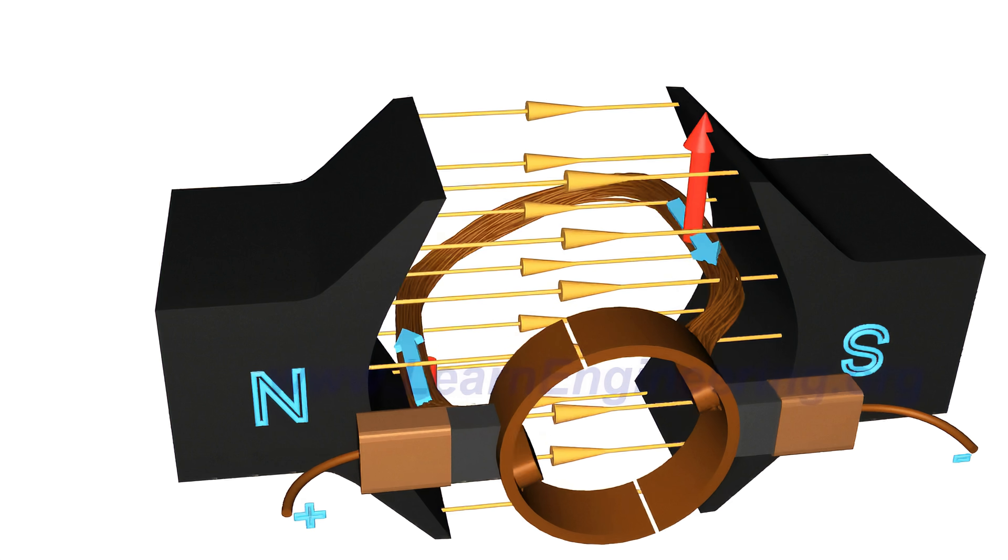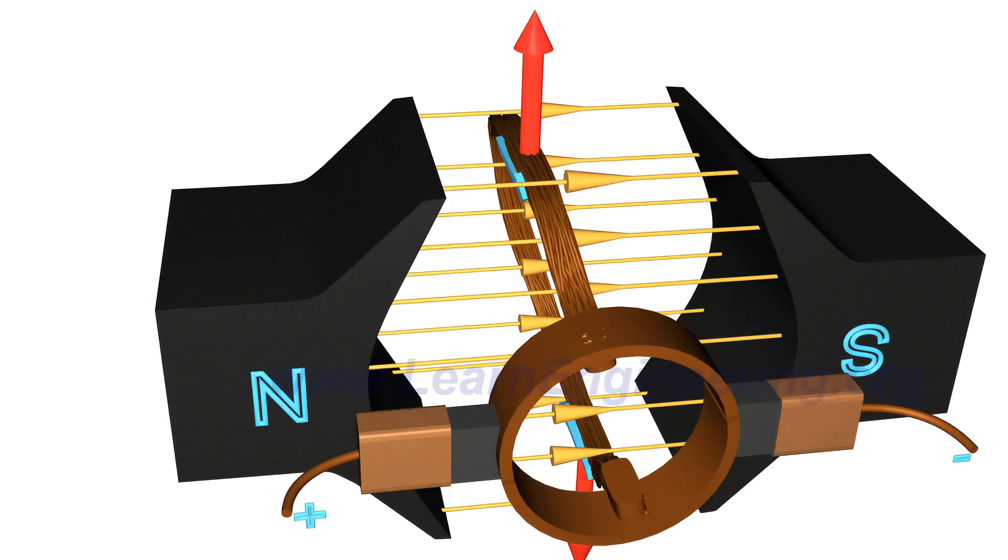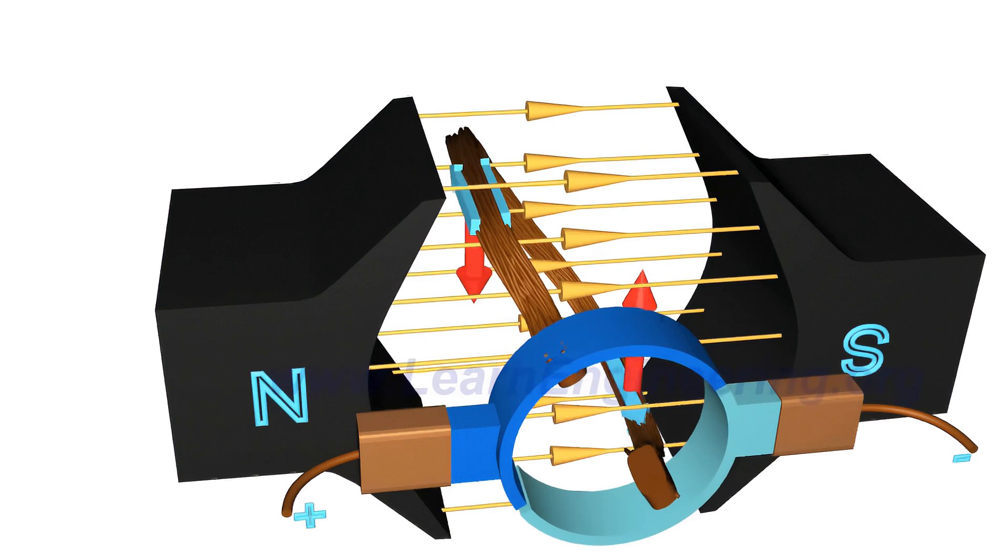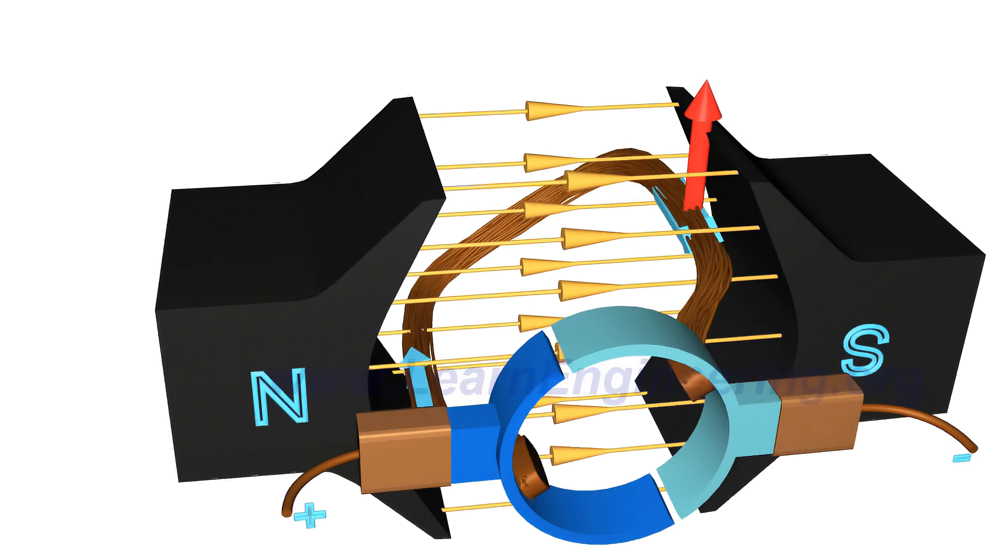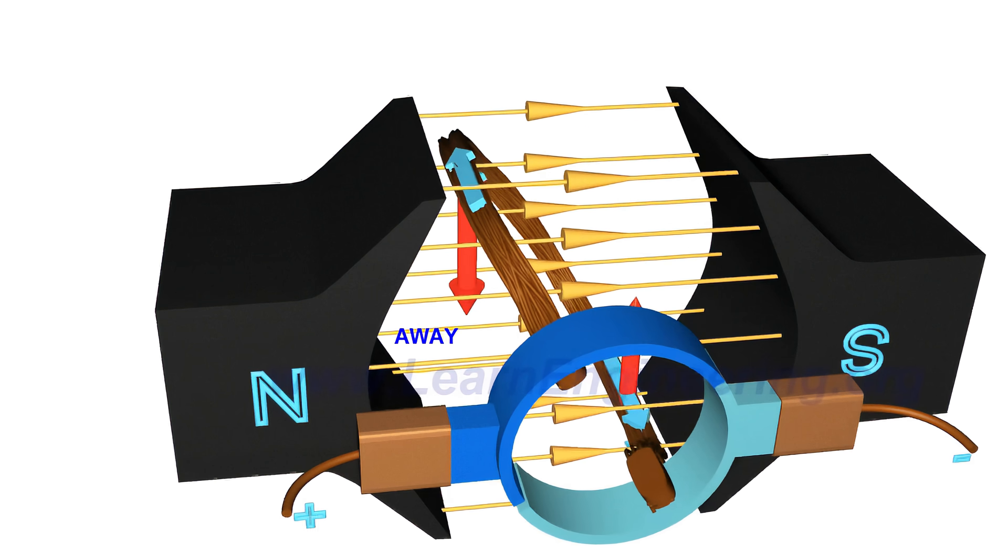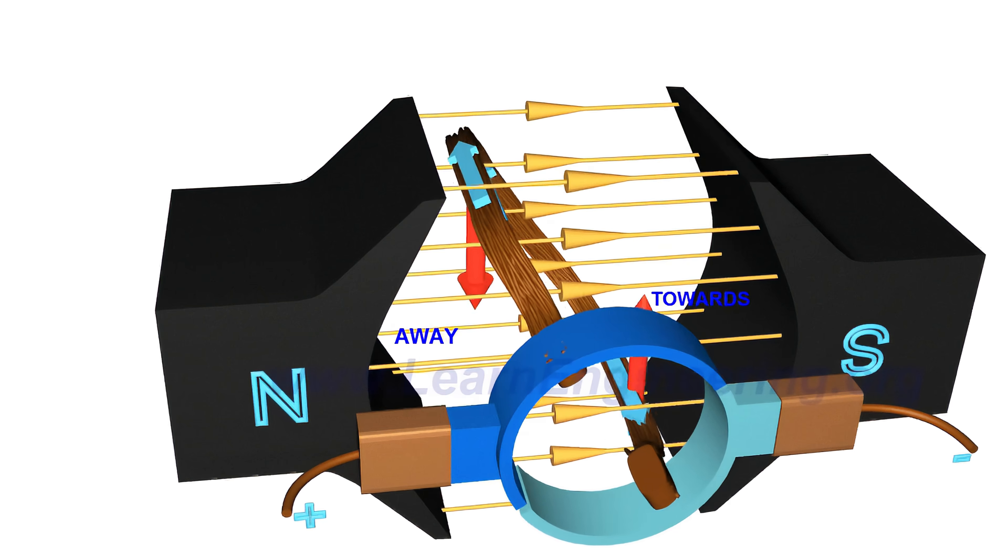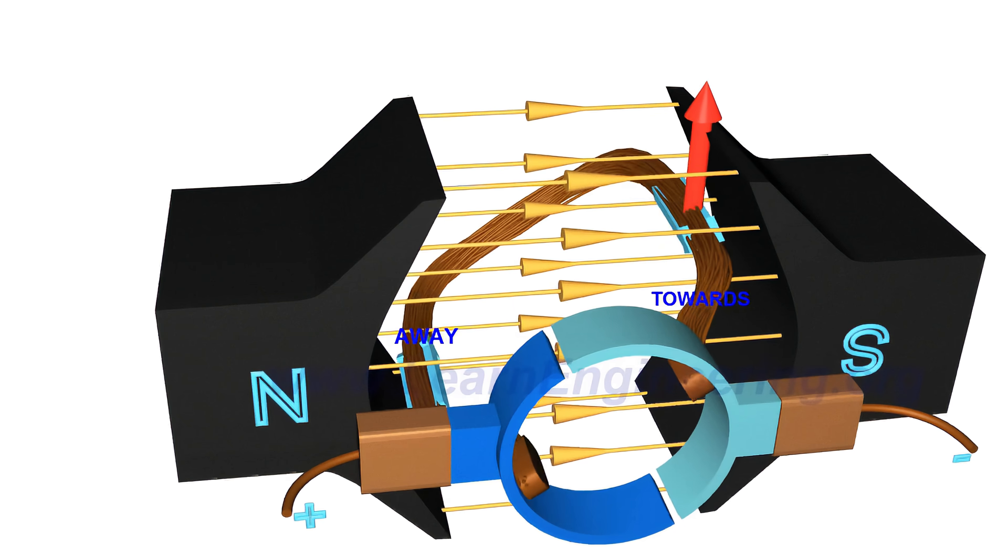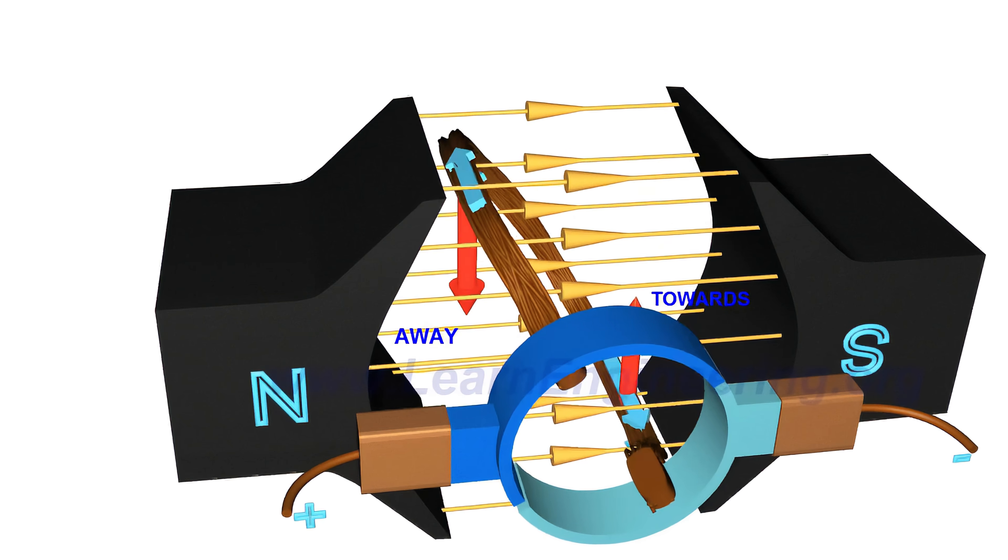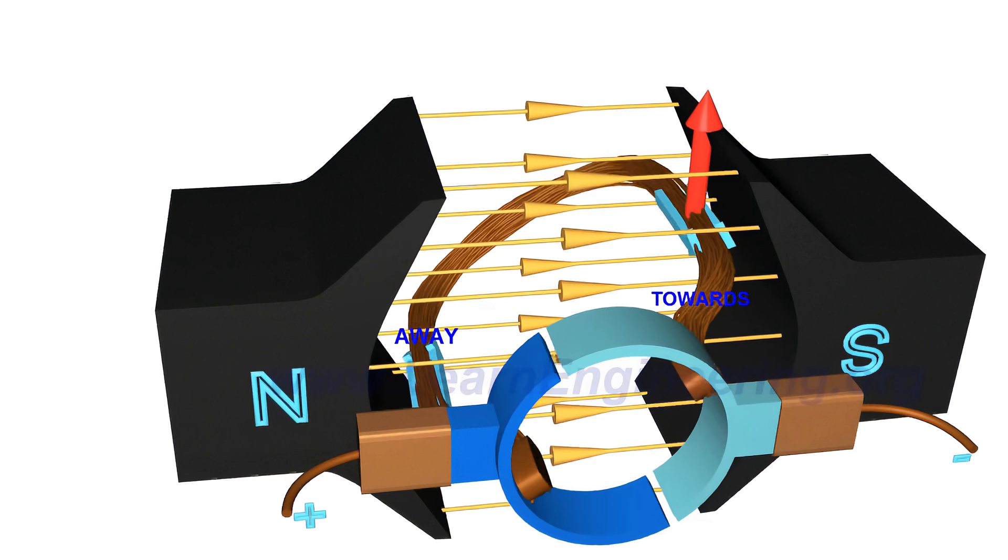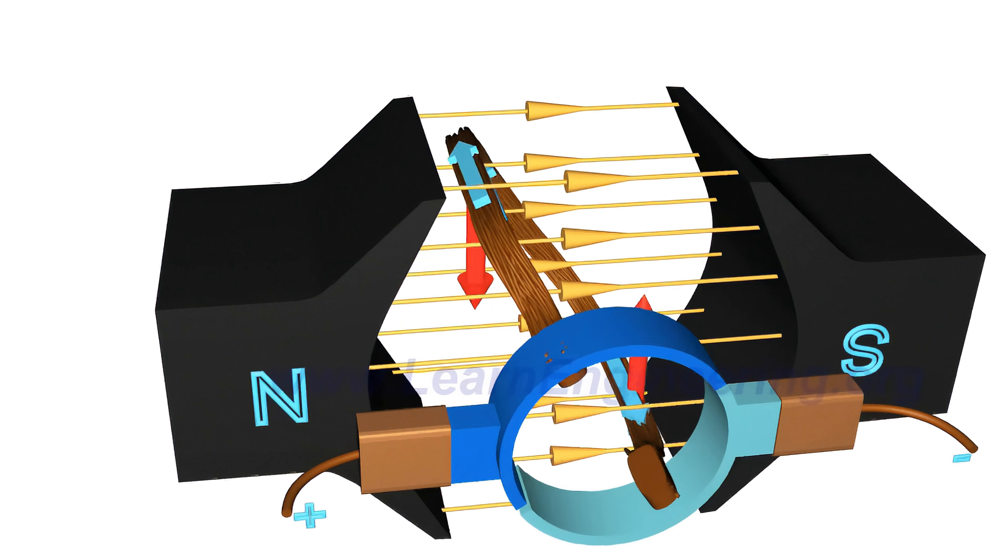You will notice that as the coil rotates, the commutator rings connect with the power source of opposite polarity. As a result, on the left side of the coil, the electricity will always flow away, and on the right side, electricity will always flow towards. This ensures that the torque action is also in the same direction throughout the motion, so the coil will continue rotating.